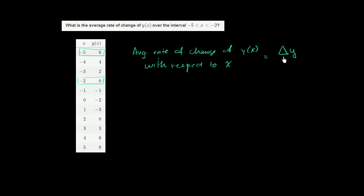Delta y, I'll just write y, I could write delta y of x. It's delta y, change in y, over our change in x. That's going to be our average rate of change over this interval.